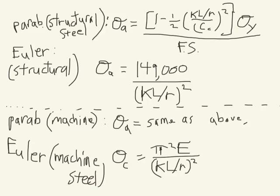The definition for Cc has been put into the equation for machine steel for the parabolic equation. So instead of just putting Cc in the machine steel version of the parabolic equation, they put in 2 pi squared E over yield stress. So you could really either use the machine form of the parabolic equation in the book or this one up here is the same equation. You could use that too if it suits you.